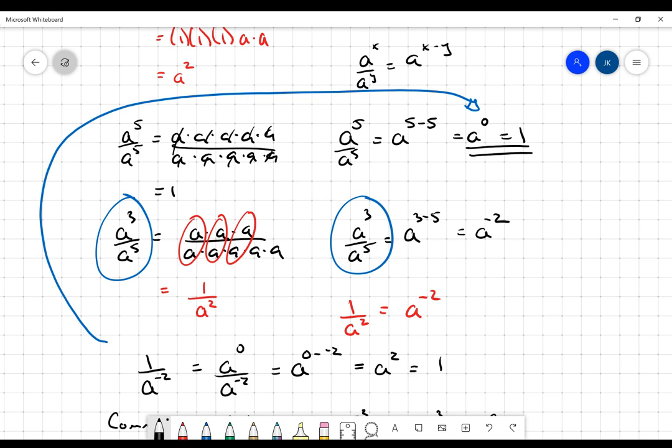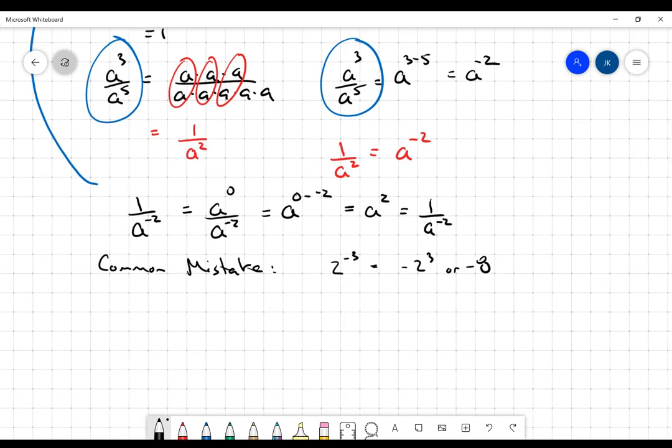Notice that, and I'll write this over here, that if you've got one over a to the negative two, that is equal to a squared. So, the negative is causing that power to switch sides in the fraction. Whether it was in the numerator or the denominator, it's causing it to switch sides. That's really what I wanted you to get out of this.